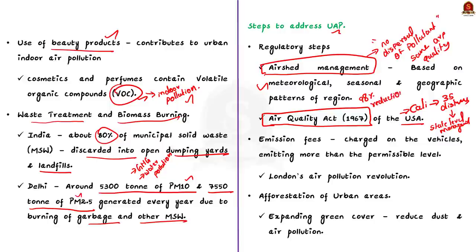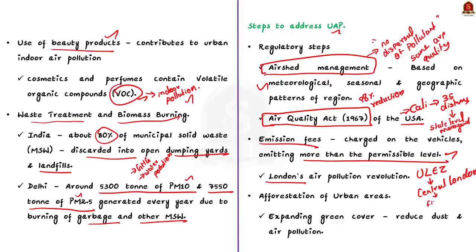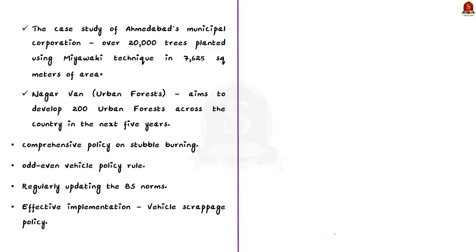Next, governments can charge emission fees on vehicles emitting more than the permissible level of pollutants. For example, London has created an ultra-low emission zone in central London, imposing hefty daily fines on cars that emit more than 75 grams per kilometer of pollutants. This has resulted in effective reduction of private vehicles and increased use of public transport. Government can also take up afforestation in urban areas — expanding green cover reduces dust and air pollution. Ahmedabad's Municipal Corporation has planted over 20,000 trees using the Miyawaki technique in 7,625 square kilometers, effectively reducing air pollution in the region.